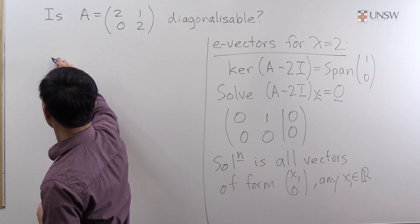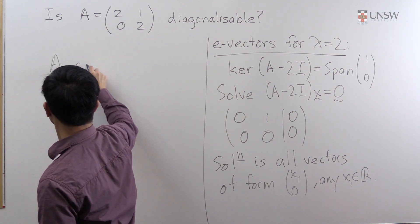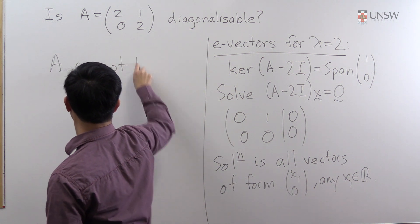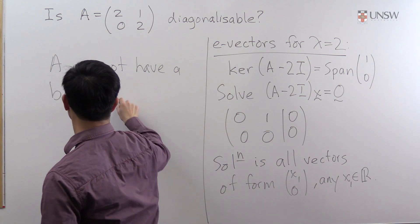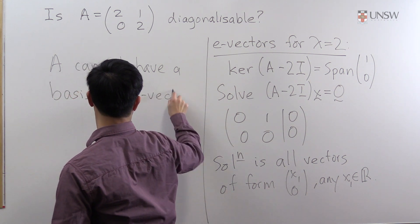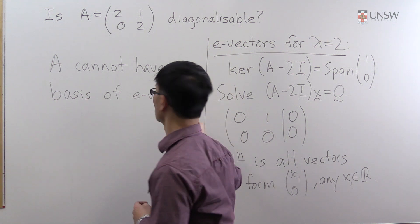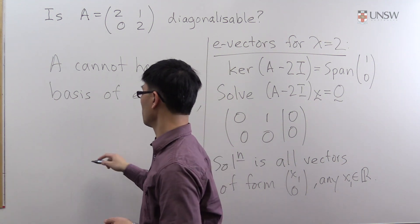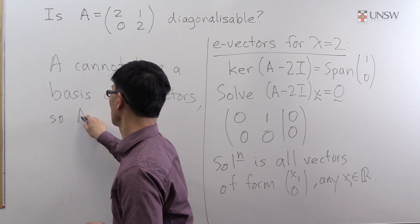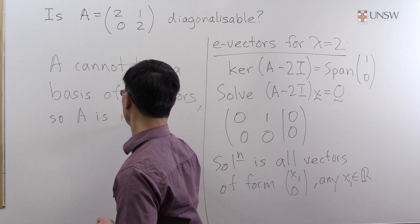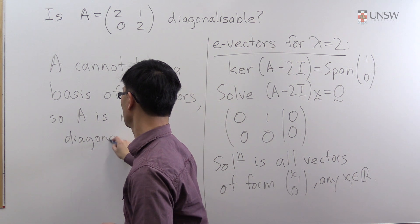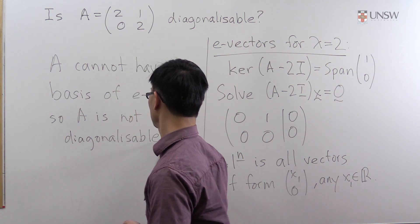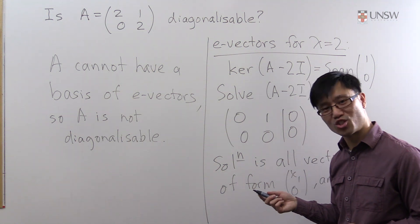So A cannot have a basis of eigenvectors, so A is not diagonalizable. And that completes this question.